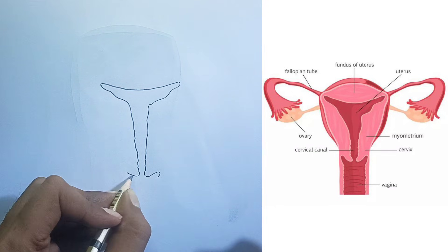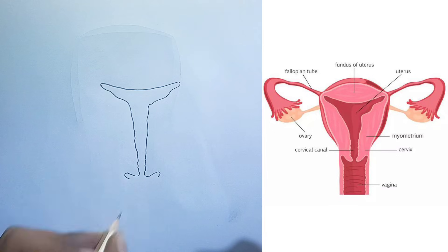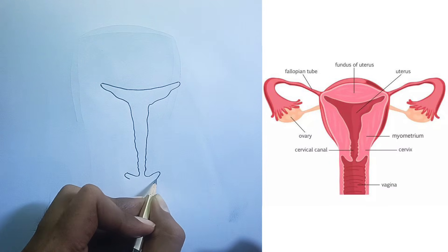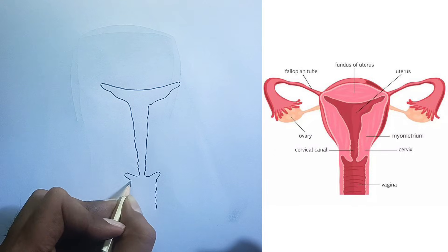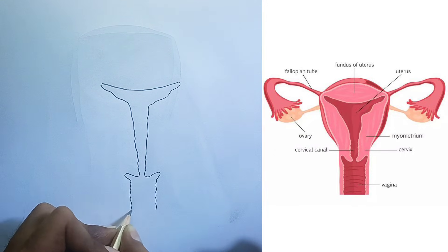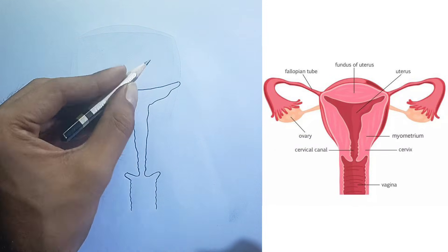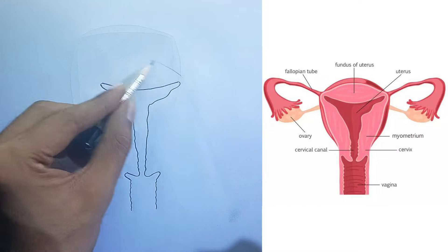Fallopian tube. Also known as oviduct, there are two fallopian tubes, one extending from each side of the upper part of the uterus. These tubes serve as a pathway for the egg to travel from the ovary to the uterus. Fertilization often occurs within the fallopian tube.